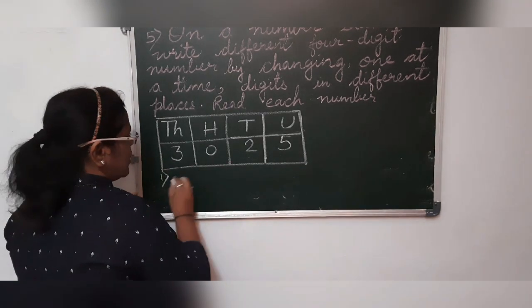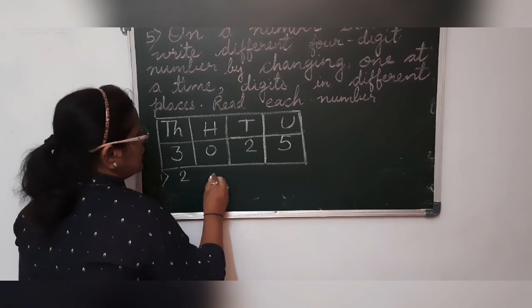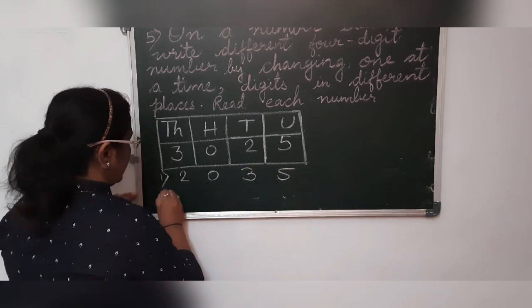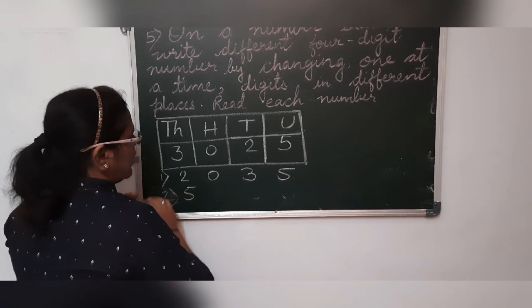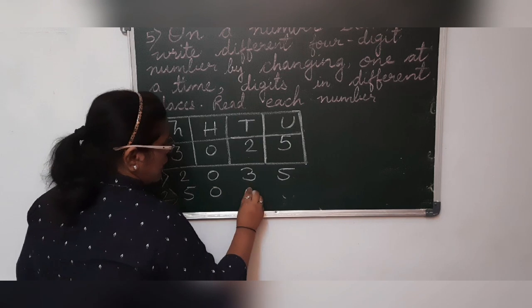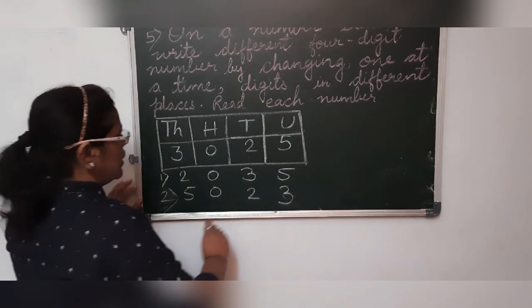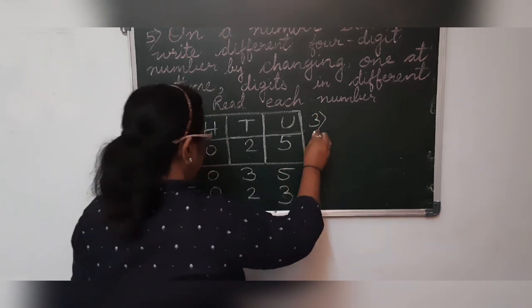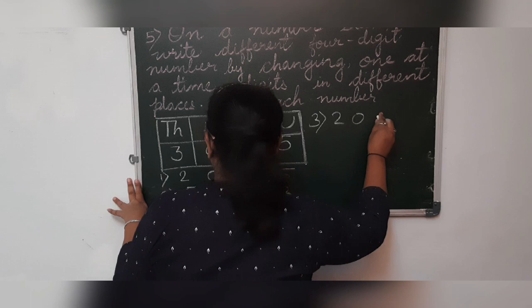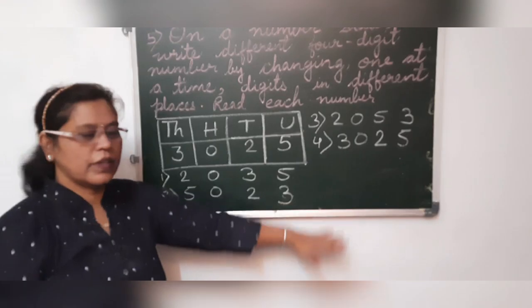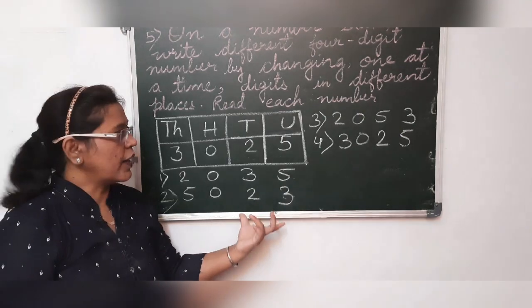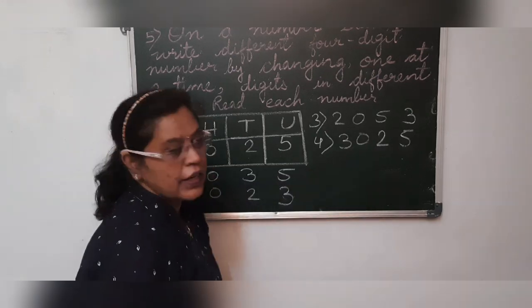At once we will change the number. We will write here 2, 2,000. In place of 2 we will put 3. So 2,035. Then we will put 5, 5,000. In place of 5,000, 5,000 and 23. So third one, 2,000, 2,050. Like this numbers you can form and you can read. The number is 2,035, 5,023, 2,053, 3,025.